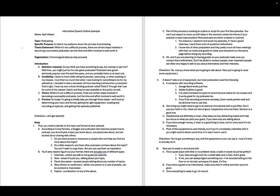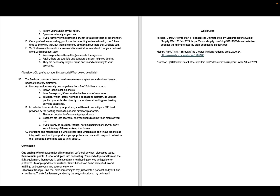Then there's a transition to main point number two, which has five sub-points — only the first one is broken down into sub-sub-points, because it covers the different kinds of software you're going to need. Then a transition to the third main point, which is about recording and continues on the next page, with five sub-points, some broken down further. Then a transition into the fourth main point, broken down into three sub-points. Then I label the conclusion and label each part — cueing the ending, reviewing the main points, and the takeaway. Then there's a works cited page with the different sources in MLA format.